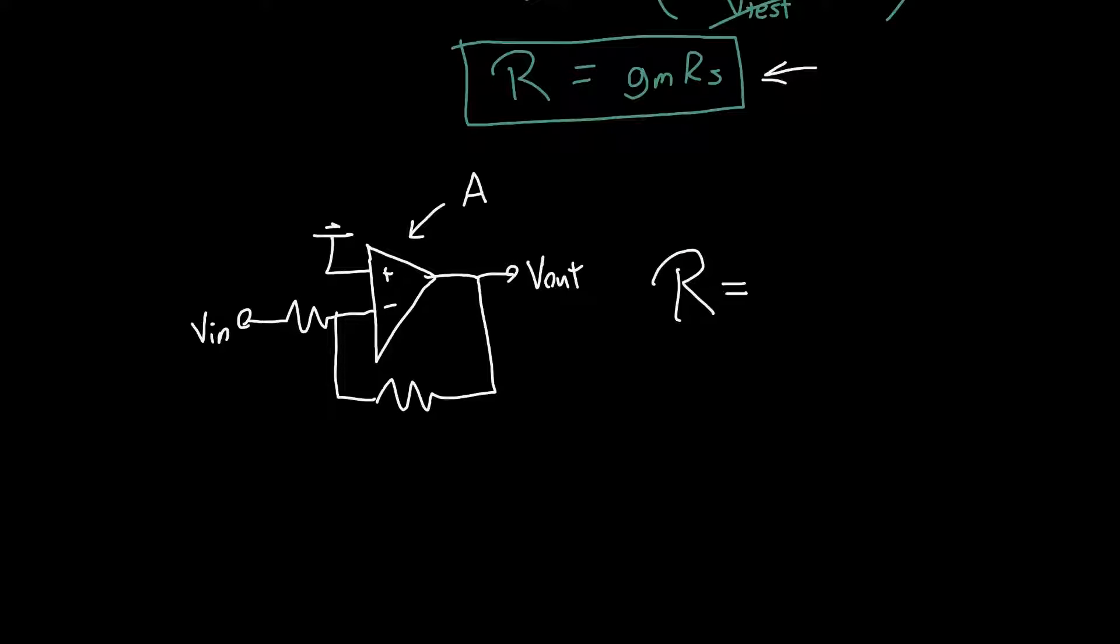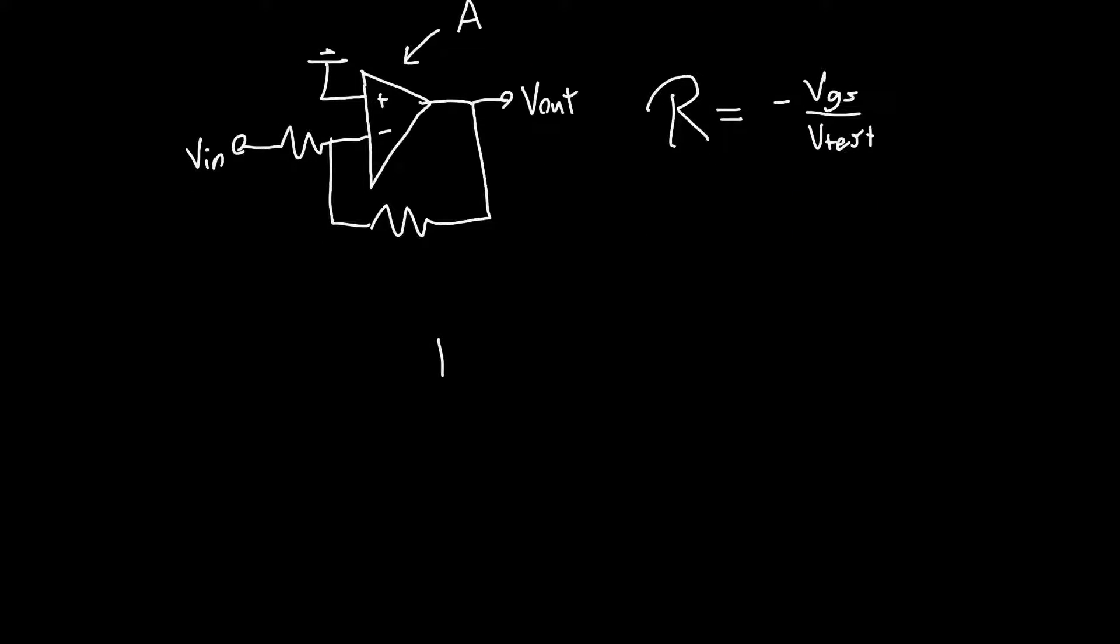Previously we defined R in terms of VGS and V test, but now we don't have a VGS. But we do have a dependent source. The ideal model for an op amp looks like this: A times V plus minus V minus. This is what's inside an ideal op amp if we assume it's got infinite input resistance and zero output resistance. We can call this V plus minus V minus term V plus minus if you prefer.